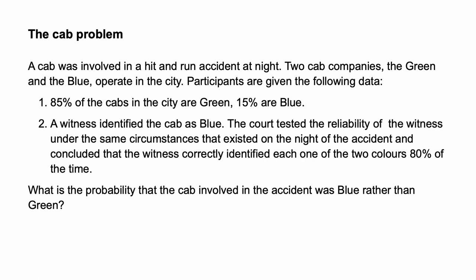A cab was involved in a hit-and-run accident at night. Two cab companies, the green and the blue, operate in the city. Participants are given the following data: 85% of the cabs in the city are green, 15% are blue. A witness identified the cab as blue. The court tested the reliability of the witness under the same circumstances that existed on the night of the accident and concluded that the witness correctly identified each one of the two colours 80% of the time. What is the probability that the cab involved in the accident was blue rather than green?